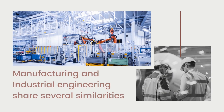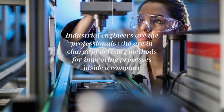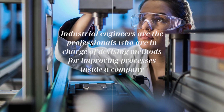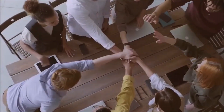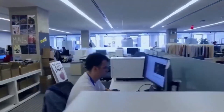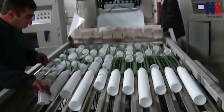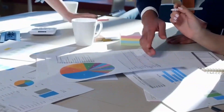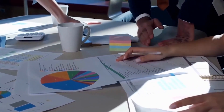In contrast, manufacturing and industrial engineering share several similarities. Industrial engineers are the professionals who are in charge of devising methods for improving processes inside a company. They analyze the processes of organizations across a range of industries to determine the technology, machinery, and personnel necessary for increasing productivity. Industrial engineers can work in a number of disciplines and departments, but their primary focus is on improving business and management processes to help companies increase profits, improve customer service, and improve product quality.